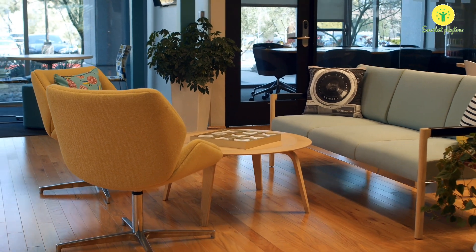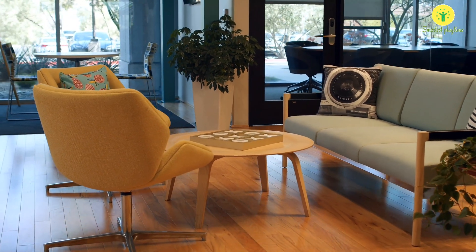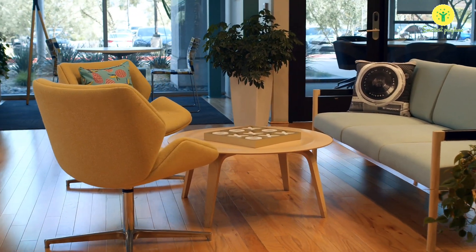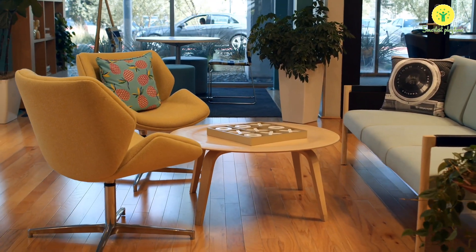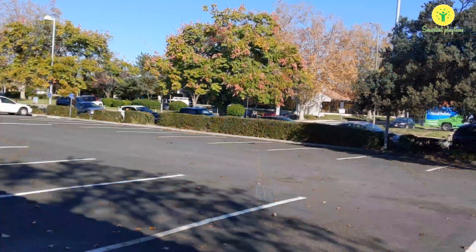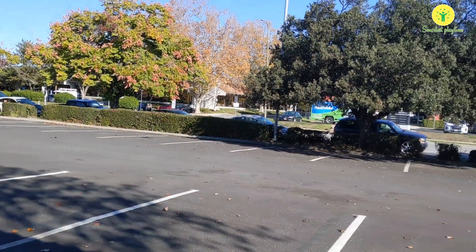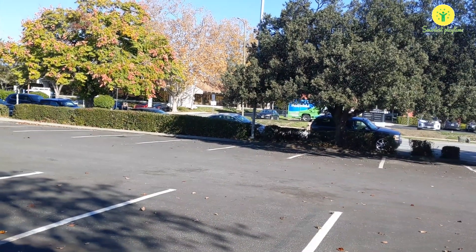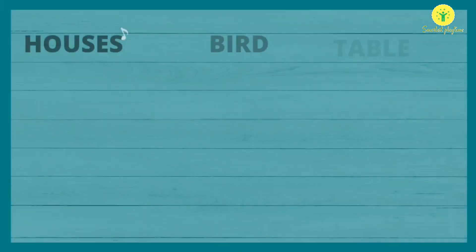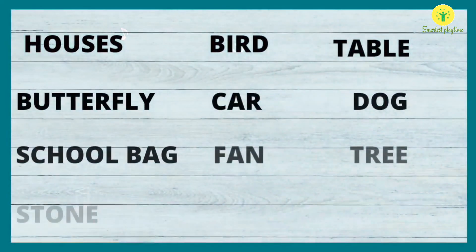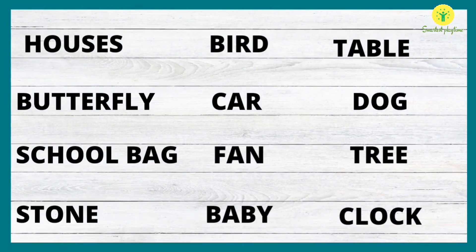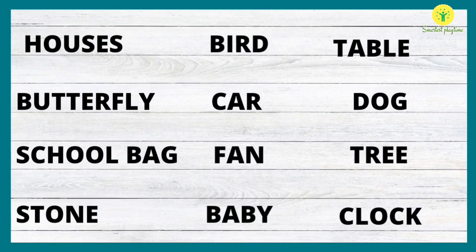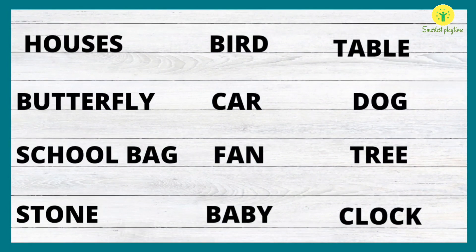Let's start today's topic by making a list of things that you have seen recently: houses, birds, table, dog, car, butterfly, school bag, fan, tree, clock, baby, stone.